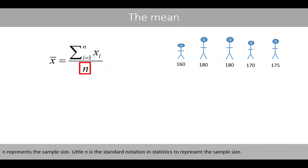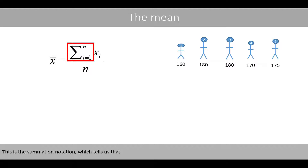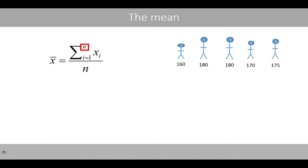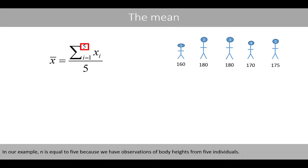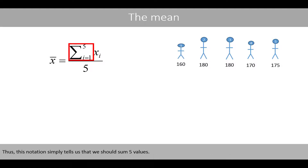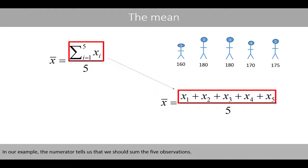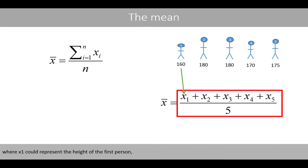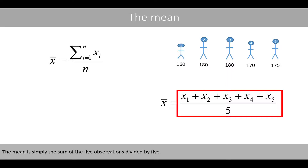Little n is the standard notation in statistics to represent the sample size. This is the summation notation, which tells us that we should sum the observations xi as i goes from 1 to n. In our example, n is equal to 5 because we have observations of body heights from five individuals. Thus, this notation simply tells us that we should sum five values. The numerator tells us that we should sum the five observations, where x1 could represent the height of the first person, x2 the height of the second person, and x3 the height of the third person, and so forth. The mean is simply the sum of the five observations divided by five.